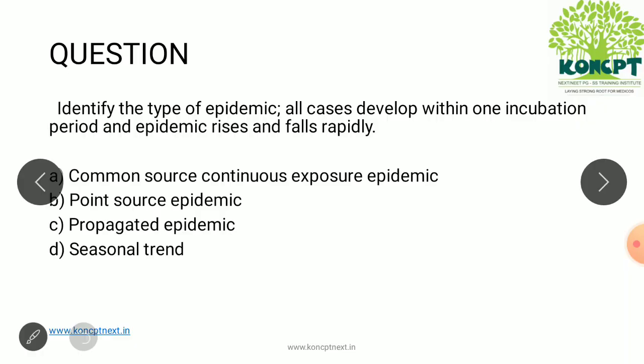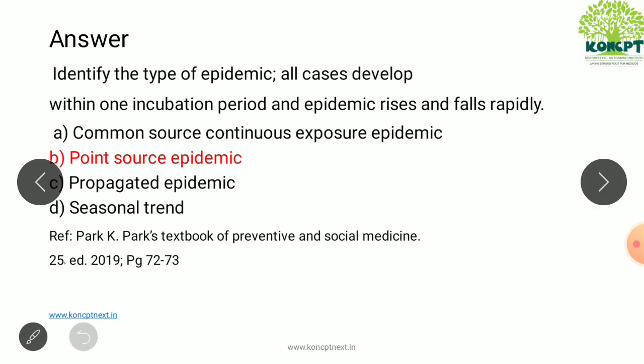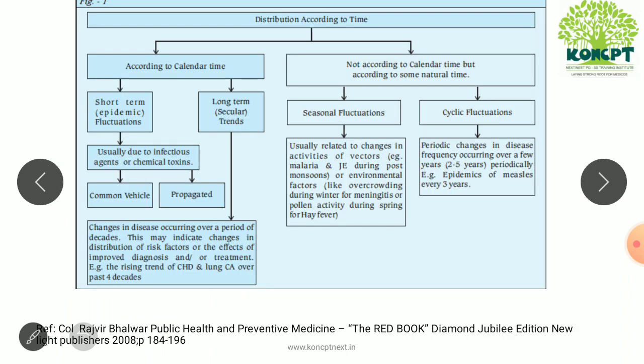The question: identify the type of epidemic where all the cases develop within one incubation period and the epidemic rises and falls rapidly. These are the options. The answer is B — point source epidemic.